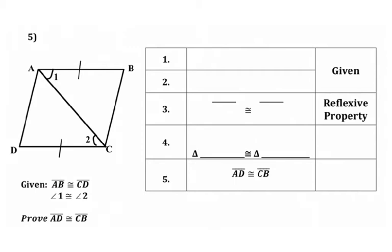First of all, it gives us the opportunity to list our givens. So our givens, I'm just going to state these two things right here. I'm going to say AB is congruent to CD, and angle 1 is congruent to angle 2. So those are my givens.